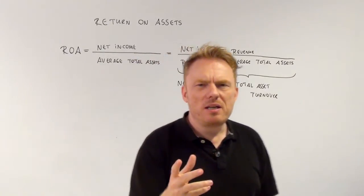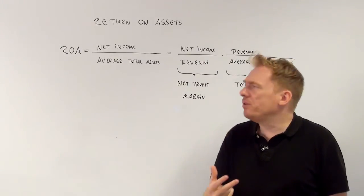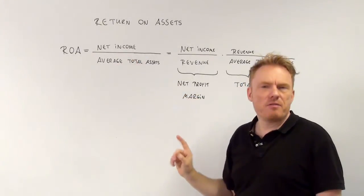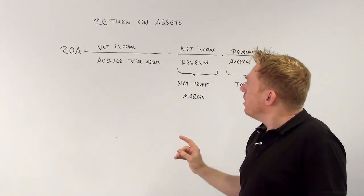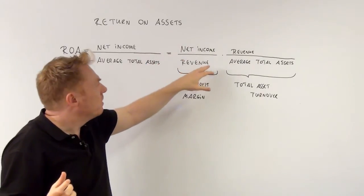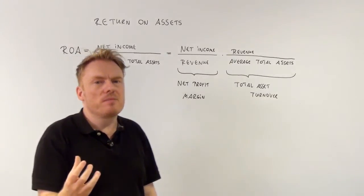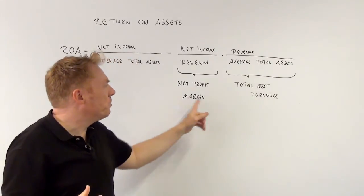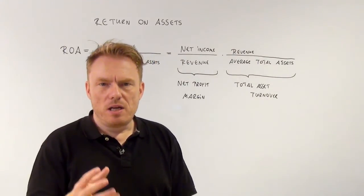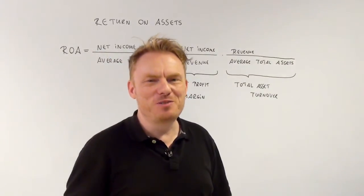To summarize, there are three different ways to calculate return on assets. The first way is net income divided by average total assets. The second way is net income divided by revenue, multiplied by revenue divided by average total assets. The third way is simply the product of net profit margin and total asset turnover. Thank you for watching.